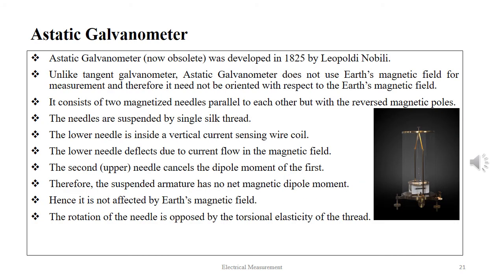The astatic galvanometer, now almost obsolete, was developed in 1825 by Leopoldo Nobili. Unlike the tangent galvanometer, it does not use the Earth's magnetic field for measurement and therefore does not need to be oriented with respect to it. It consists of two magnetized needles parallel to each other but with reverse magnetic polarities, suspended by a single silk thread. The lower needle is inside a vertical current-sensing wire coil and deflects due to current flow. The upper needle cancels the dipole moment of the first one, so the suspended armature has no net magnetic dipole moment and is not affected by the Earth's magnetic field. The rotation of the needle is opposed by the torsional elasticity of the thread.